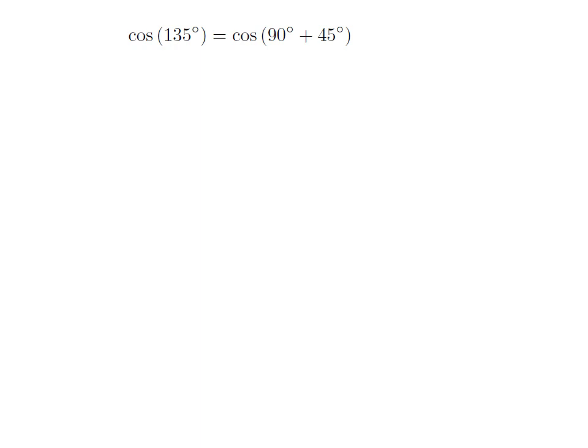As 135 degrees is equal to 90 degrees plus 45 degrees, so cosine of 135 degrees is equal to cosine of 90 degrees plus 45 degrees.